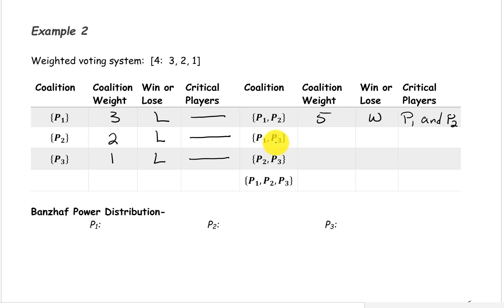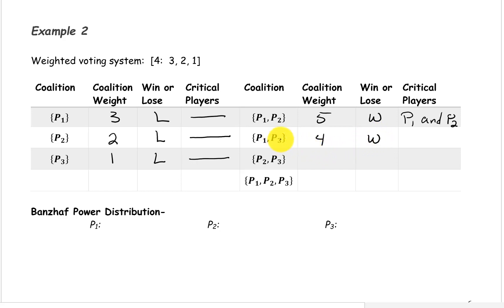The coalition containing players 1 and 3 has a weight of 3 plus 1, or 4. This is a winning coalition. If we remove player 3, the weight drops down to 3, causing it to lose, so player 3 is critical. If we were to remove player 1, the weight would drop down to 1, causing it to lose, so both players 1 and 3 are critical.